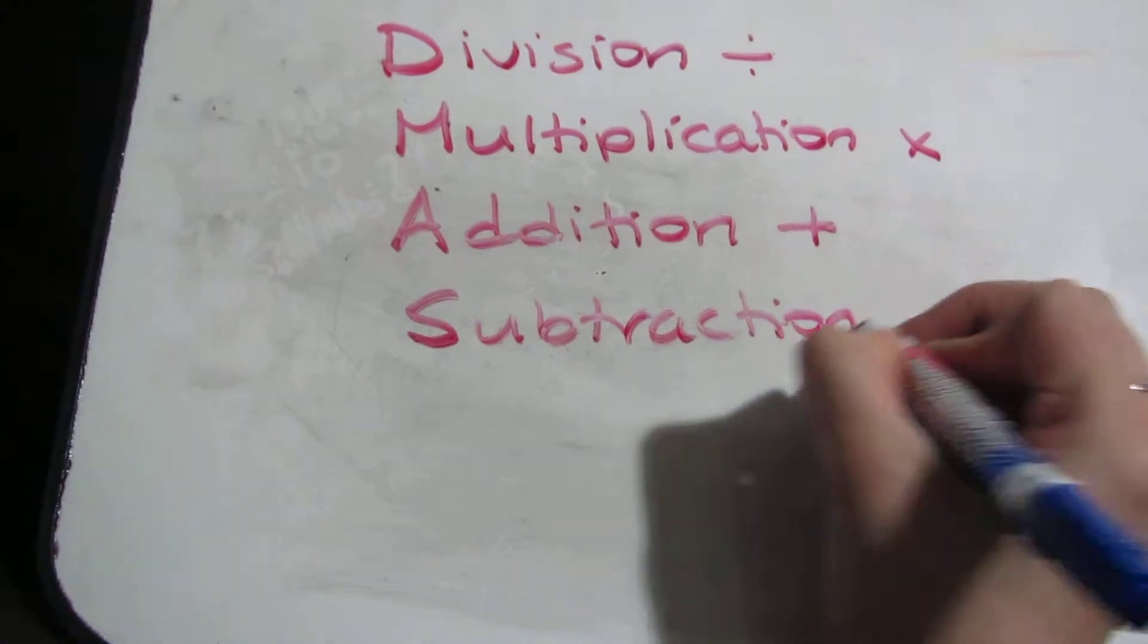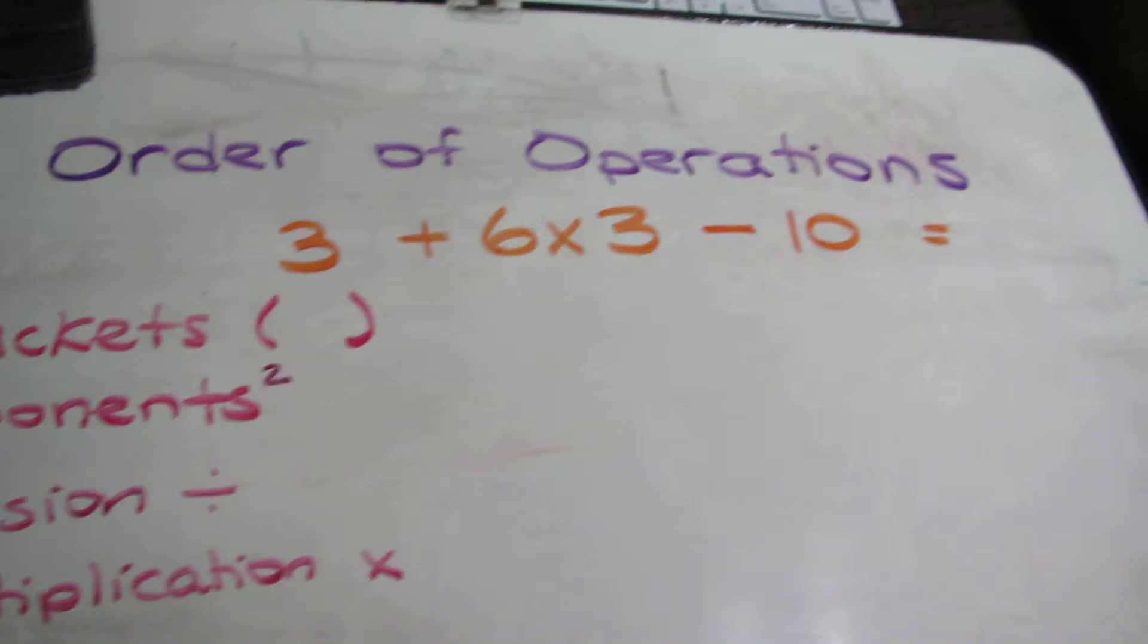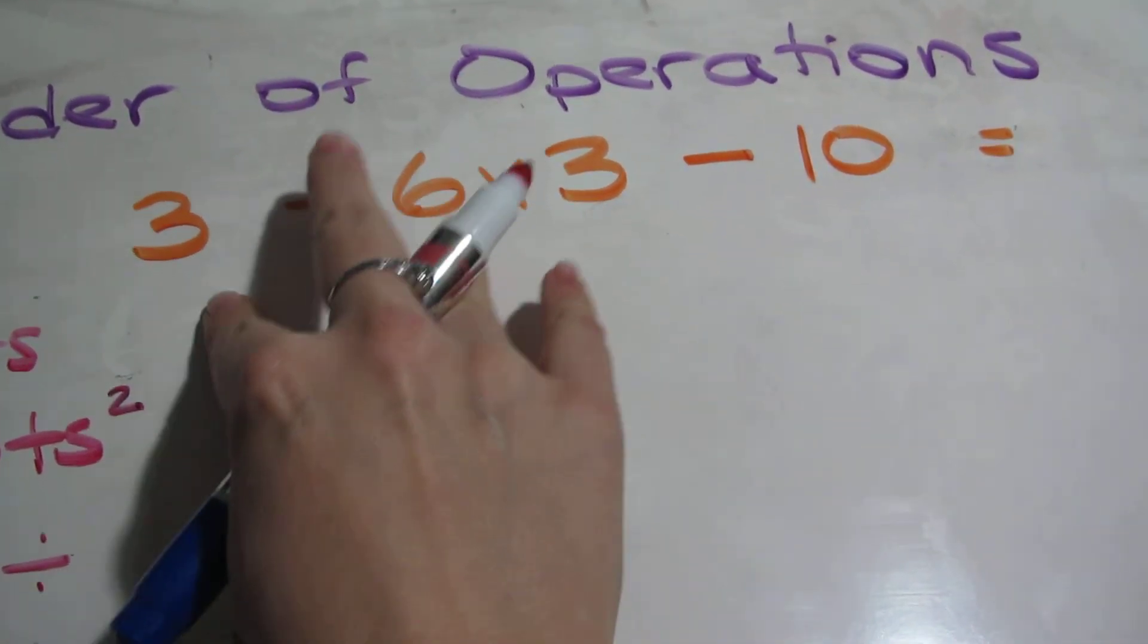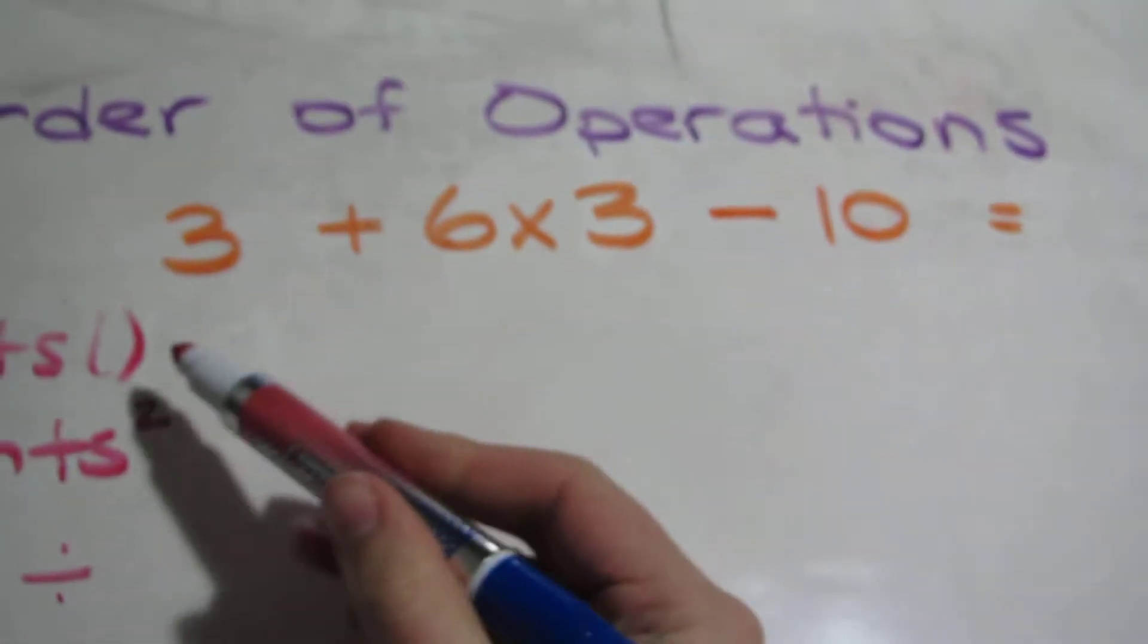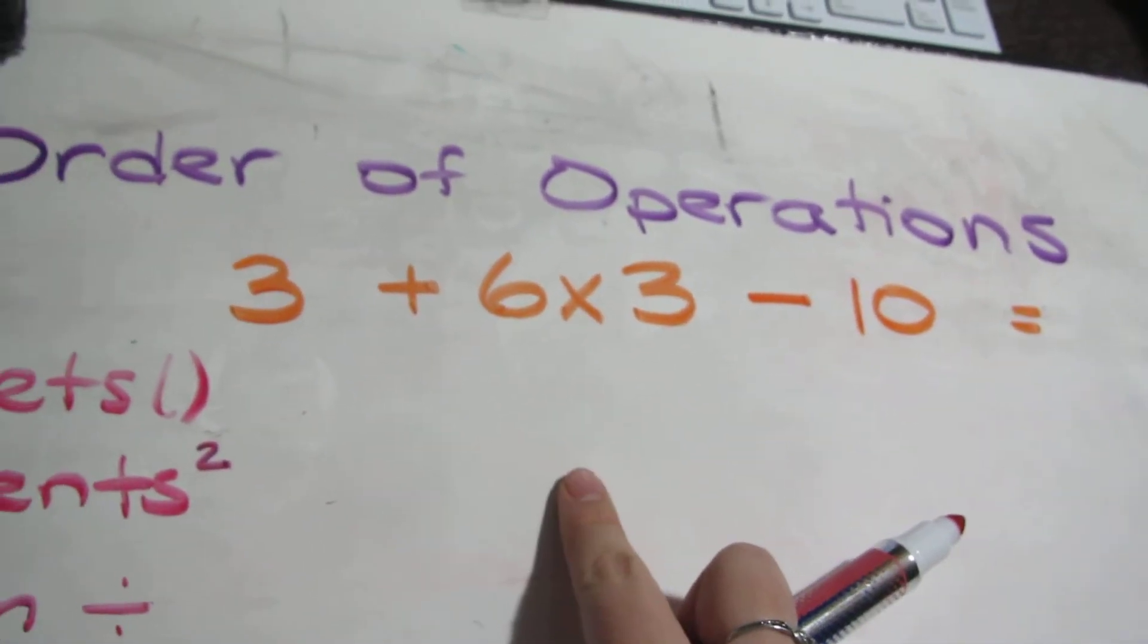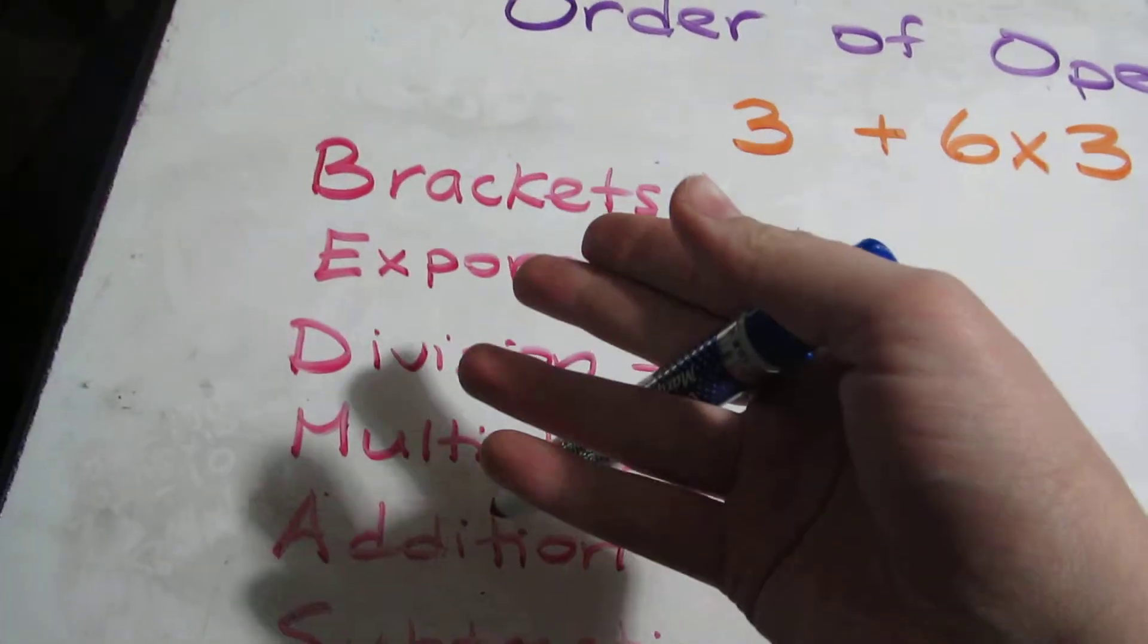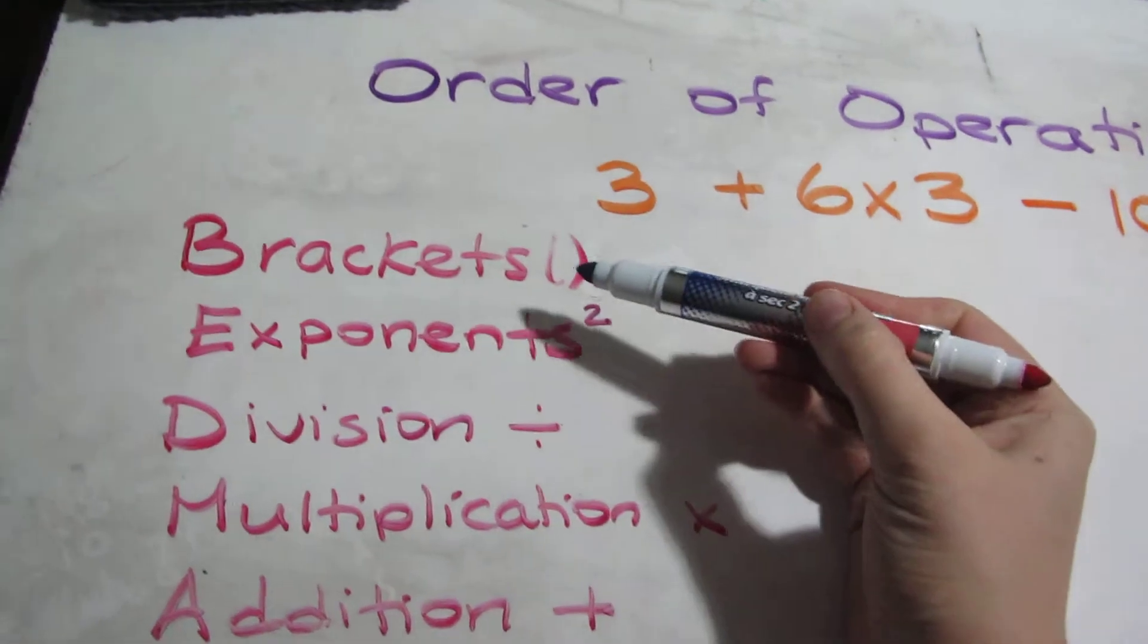This is the order we have to do each of our steps. Let's tackle our problem over here. What we're given is 3 + 6×3 - 10. If you enter this in a calculator, you would not get the right answer because you have to do it in a certain order. That's why BEDMAS is used. We're going to do one thing at a time, so you check: